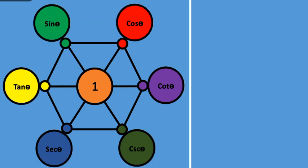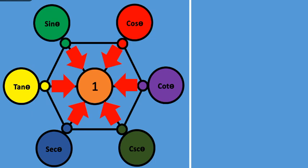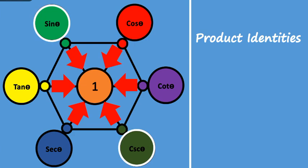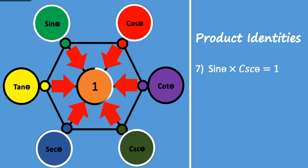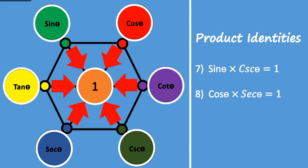Have a look at this orientation of arrows — it defines some product identities also. It states: the product of two trigonometric functions that lie on the endpoints of a diagonal of the hexagon equals 1. For example, the product of sine theta and cosecant theta equals 1 (product identity 7). The product of cos theta and secant theta equals 1 (identity 8). The product of cot theta and tan theta equals 1 (identity 9).